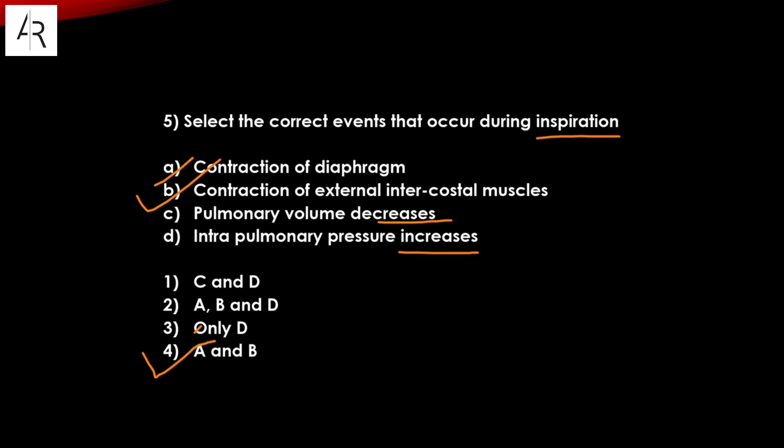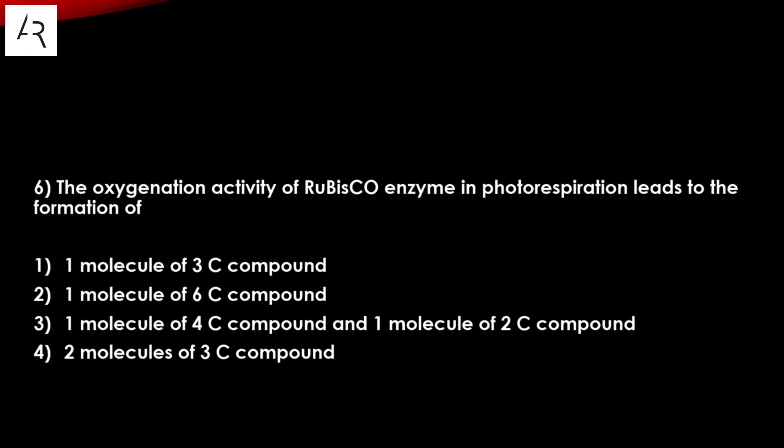Question number six: the oxygenation activity of rubisco enzyme in photorespiration can lead to the formation of what? In photorespiration, the products are PGA and phosphoglycolate. PGA is a three-carbon compound and phosphoglycolate is a two-carbon compound. That's why option number one is the answer.